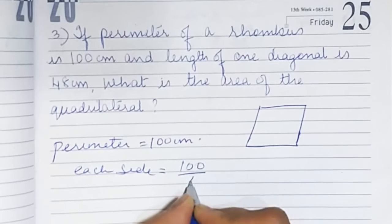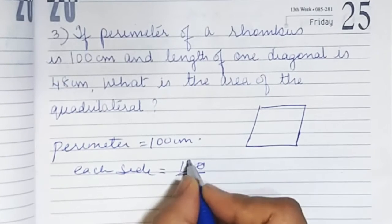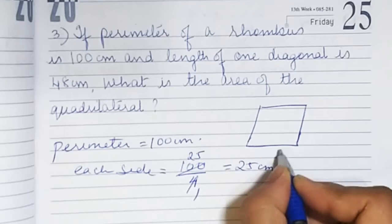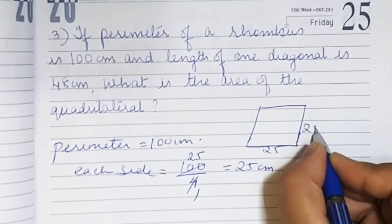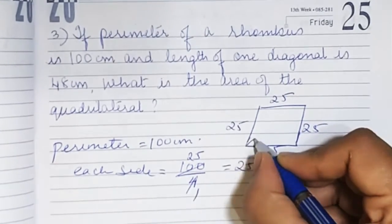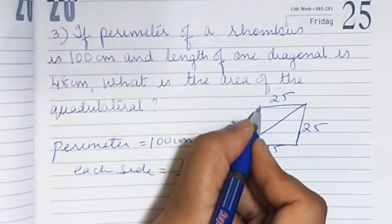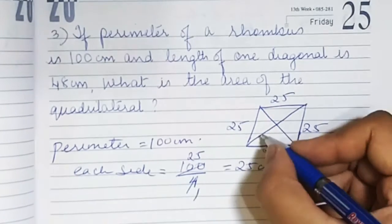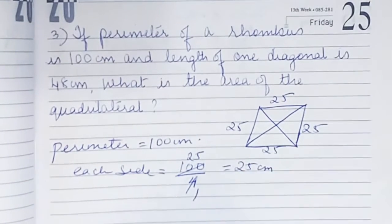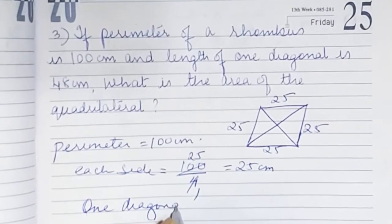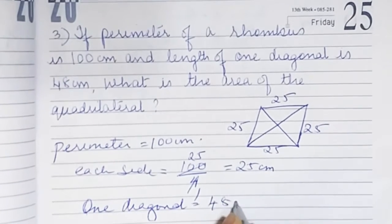Since all sides are equal, 4 into 25 is 100, so each side is 25, 25, 25, and 25. The rhombus has two diagonals which are perpendicular bisectors of each other. One diagonal is given as 48 centimetres.